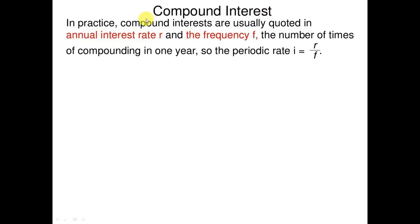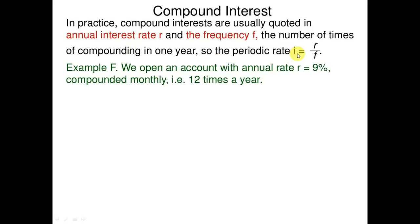In practice, compound interest is usually quoted as an annual interest rate r, and f is the number of times of compounding in one year, so the periodic rate i equals r over f.